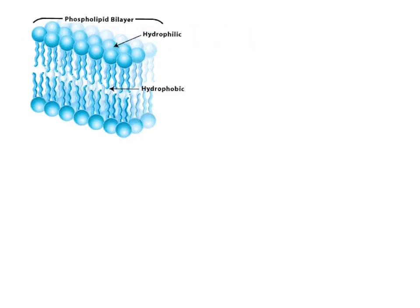When we put these phospholipids together in an aqueous environment like cytoplasm, we get the phospholipid bilayer — all the fatty acid tails pointing toward each other with the hydrophilic heads pointing outward toward the water. This allows cells to form membranes. When we look at the cell membrane later, we'll add protein molecules, carbohydrates, and other lipids, but this phospholipid bilayer is the basis of an organism having an inside and an outside.